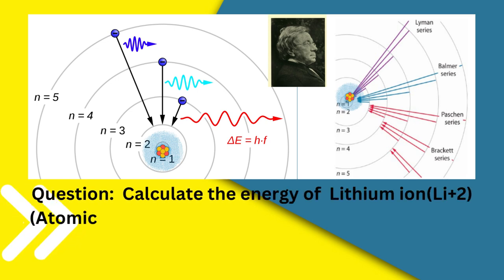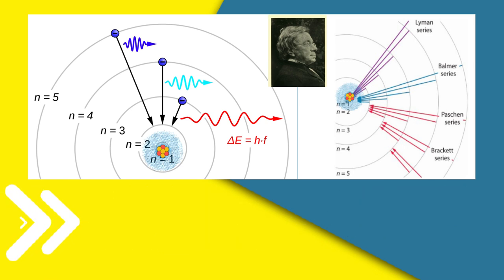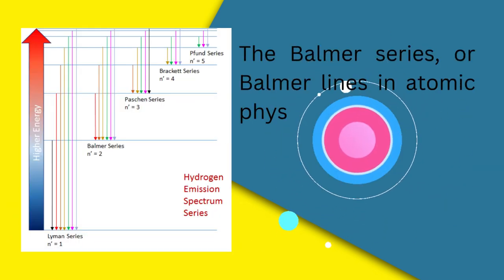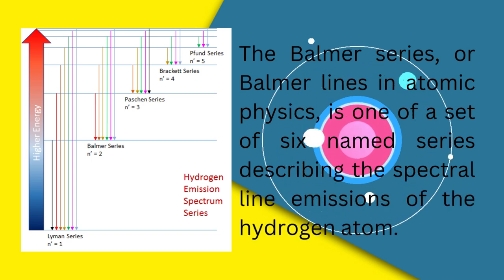Calculate the energy of lithium ion Li²⁺ for Balmer series when electron jumps from n=5. The Balmer series, or Balmer lines, in atomic physics is one of a set of six named series describing the spectral line emissions of the hydrogen atom.